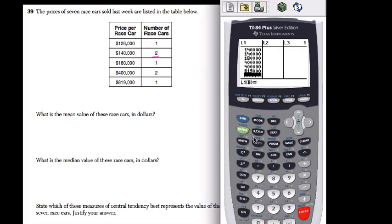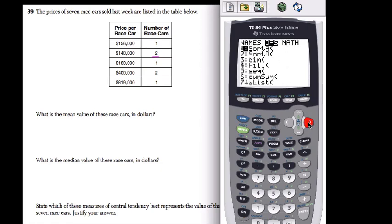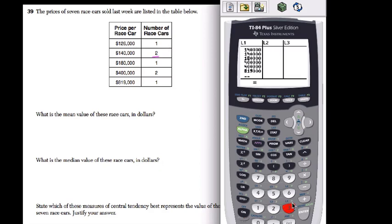So this data is now entered into a list. I want to calculate with that. Hit second stat, and then to this math, you want to scroll over. Mean is the third one. Hit three. I want to find the mean of list one. Hit second one, and it will give me that value.